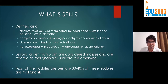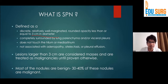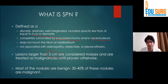So what exactly is an SPM? Basically it is a single nodule in the lung parenchyma which is equal to or less than three centimeters in diameter, and completely surrounded by lung parenchyma or the pleura. Lesions which are greater than three centimeters are considered as masses. Most of the nodules are benign, around 30 to 40 percent.